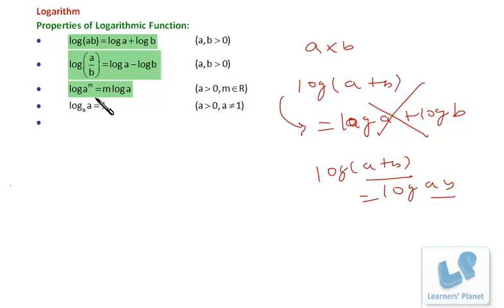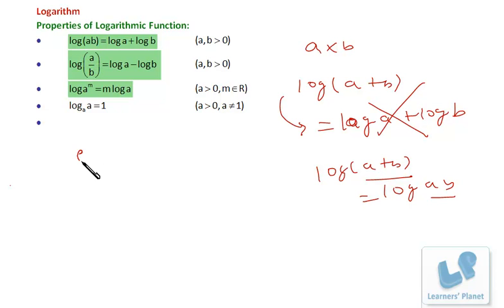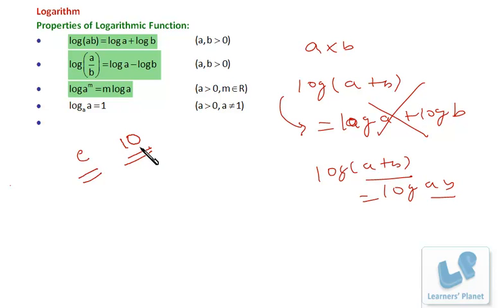The third property: log of a raised to m can be written as m times log a. And log a to the base a — when base and index are the same — the value of the logarithm is 1. In all these cases, a and b are positive quantities. If no base is written, in calculus we consider the base as e, and in arithmetic calculations we consider it to be 10.